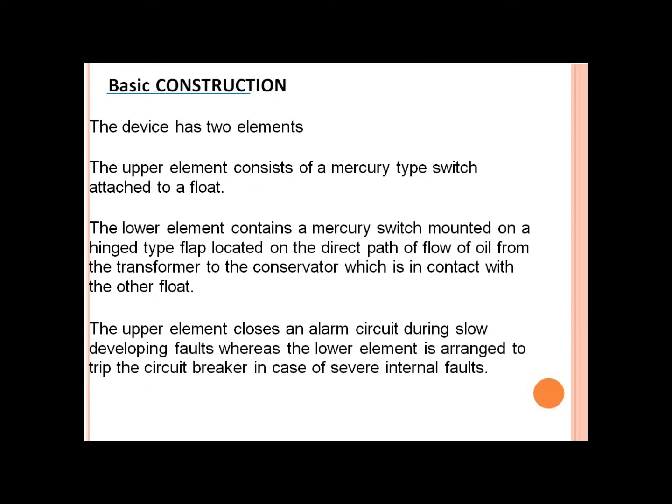The basic construction is as discussed. The upper element consists of a mercury-type switch attached to a float. The lower element contains a mercury switch mounted on a hinge-type flap, located on the direct path of flow of oil from the transformer to the conservator. The upper element closes an alarm circuit during slow developing faults, whereas the lower element is arranged to trip the circuit breaker in case of severe internal faults.